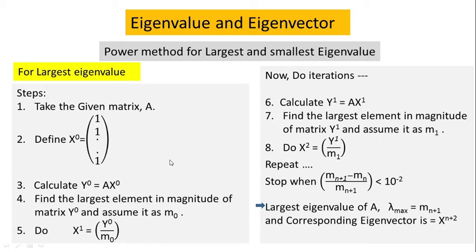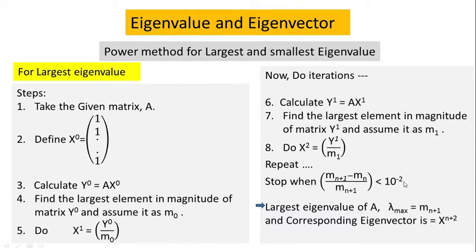These steps you have to do several times. In the second iteration you have to do a similar thing: Y1 is nothing but the multiplication of A with X1 — initially it was A with X0, but now in the second iteration you multiply A with the new X1. Then you find out the largest element in magnitude of Y1, let's say M1. Then divide all the elements of Y1 by M1 to get X2. Repeat these steps until you get a convergent criteria which is |M(n+1) − Mn| / |M(n+1)| less than 10^(−2).